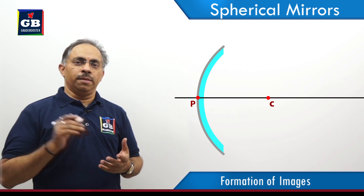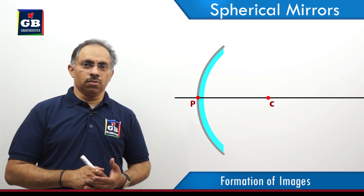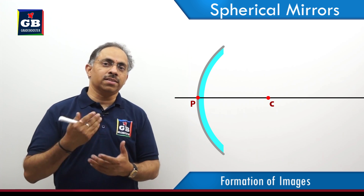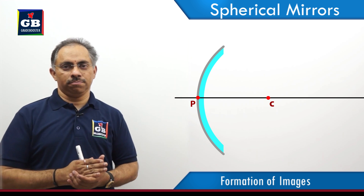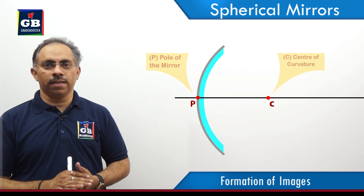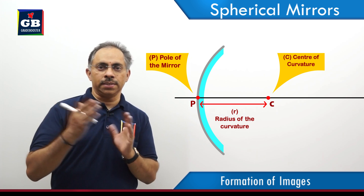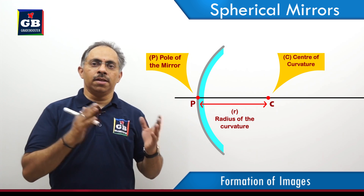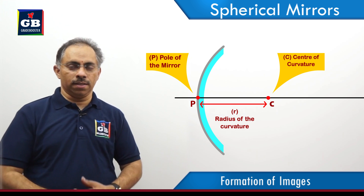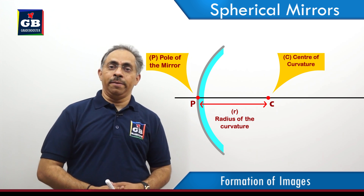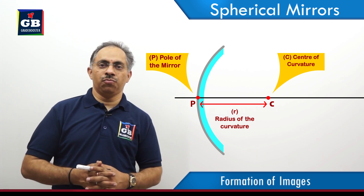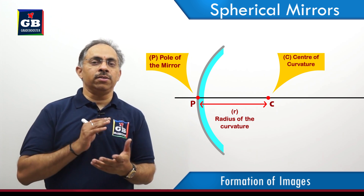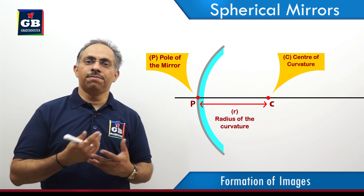To consider the images formed by spherical mirrors and to construct the images using some rays. When we say to construct the images, we mean that if I am given a spherical mirror and its parameters — like its center of curvature, the distance from the pole to the center of curvature, which we call the radius of curvature — and the distance of the object from the pole of the mirror, then where is the image formed? Can we construct the image formed by the spherical mirror geometrically? That is what we mean by construction of images formed by spherical mirrors.